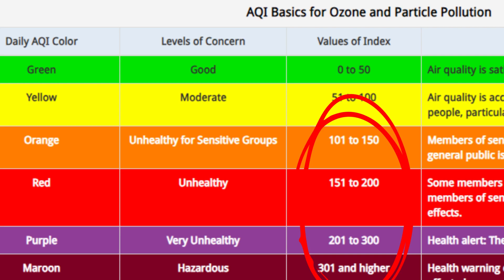The AQI is divided into six categories. Each category corresponds to a different level of health concern, and each category also has a specific color. The color makes it easy for people to quickly determine whether the air quality is reaching unhealthy levels in their region.